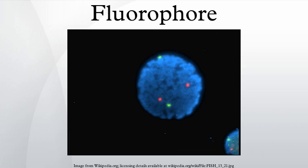Fluorescein, via its reactive isothiocyanate derivative FITC, has been one of the most popularized fluorophores. From antibody labeling, the applications have spread to nucleic acids thanks to TET. Other historically common fluorophores are derivatives of rhodamine, coumarin, and cyanine.